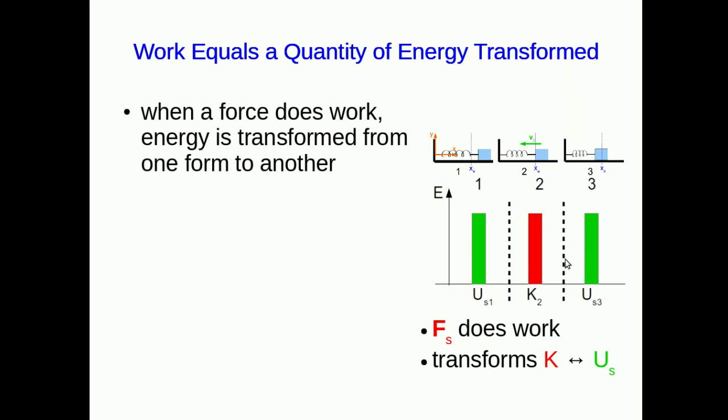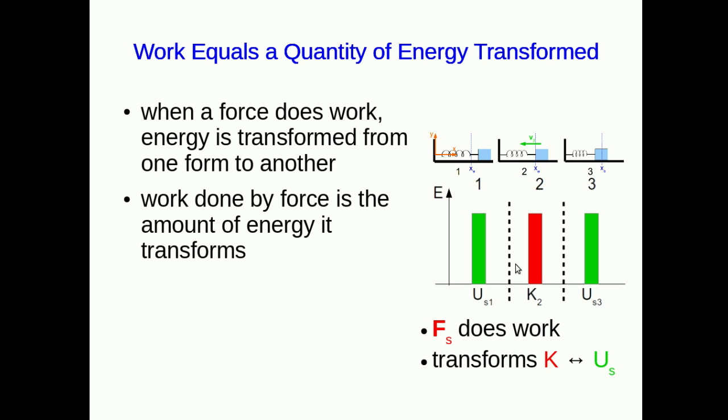Similarly when a mass is oscillating back and forth on a spring, in this case where there's no friction the only force doing work is the spring force. And it's resulting in transformations of energy back and forth between spring energy and kinetic energy. So we're going to define the amount of work done by a force as the amount of energy that it transforms as a result of it doing work.